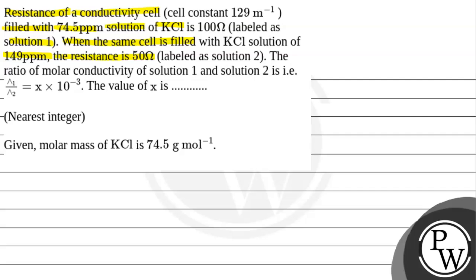The ratio of the molar conductivity of solution 1 and solution 2, that means lambda 1 divided by lambda 2, equals x multiplied by 10⁻³. The value of x we need to find out. Given, molar mass of KCl is 74.5 g/mol.